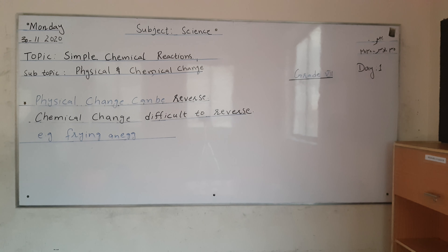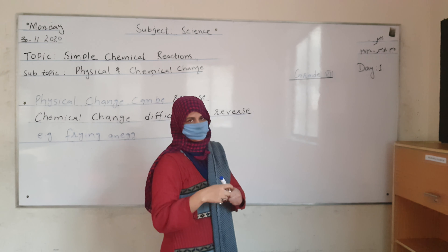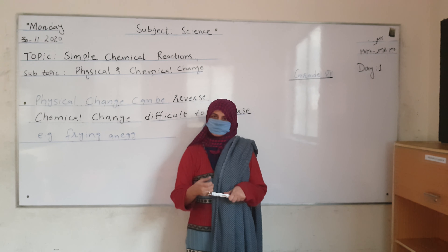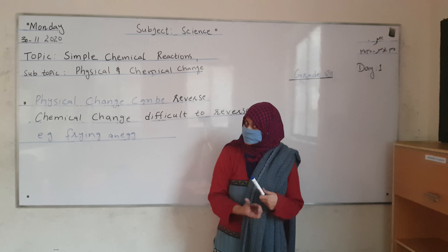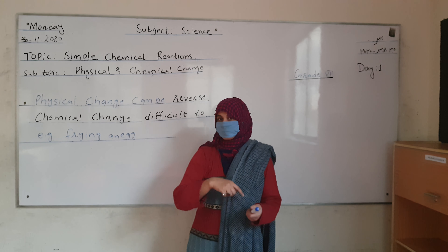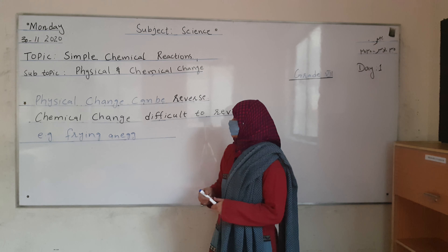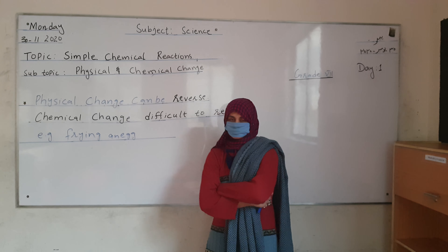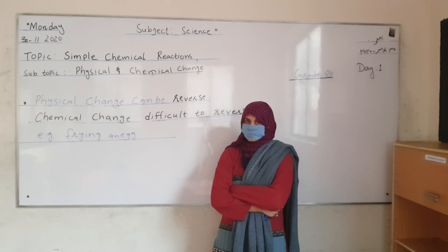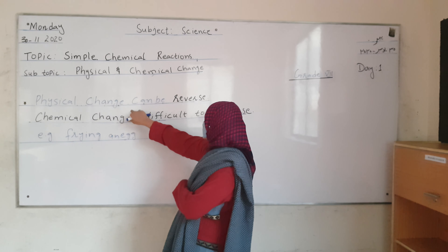If you talk about chemical change, an example could be frying an egg or anything which you are going to cook. You have an egg, you break it, put it on a pan on your stove, and you fry it. Once it has been fried, it is difficult or impossible to reverse it back to its original state. That is called a chemical change.